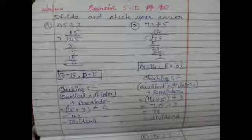Checking section: 15 multiplied by 3 plus 0 is 45, which equals our dividend. Answer is correct.